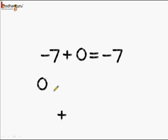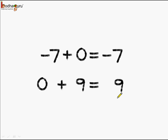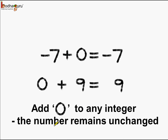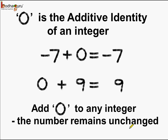0 plus 9 is equal to 9, which means the answer or the sum is the same as the number. If we add zero to any integer, the number remains unchanged. So zero is the additive identity of an integer, meaning if we add zero to any integer, the integer remains the same — that is, the sum is the same as the integer itself.